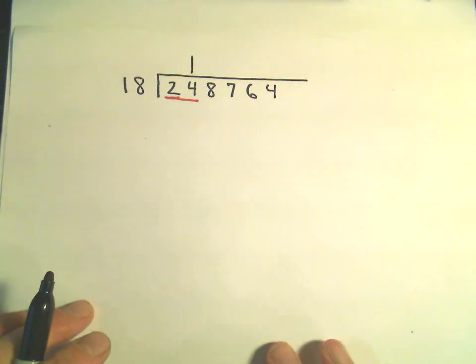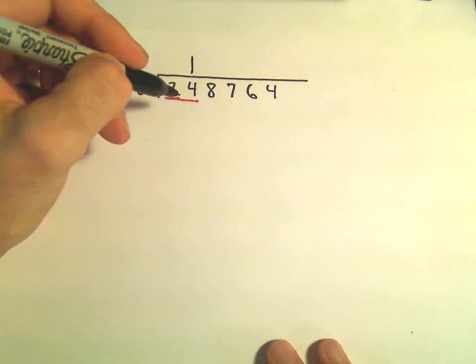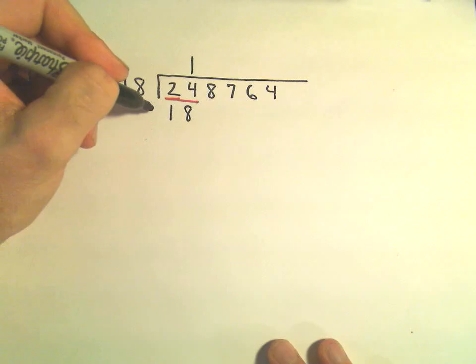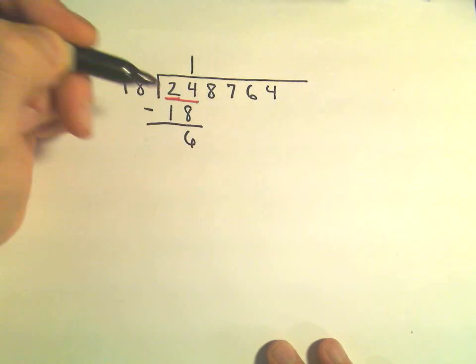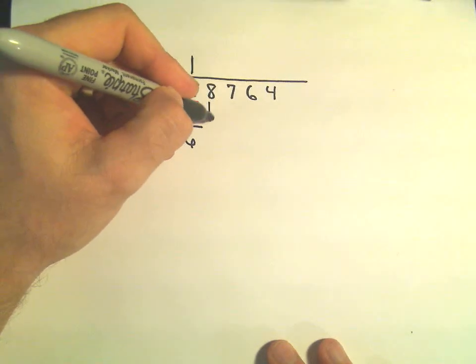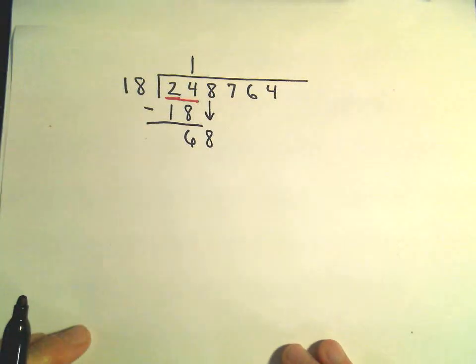And I believe 18 would go into 24 just simply one time. And then we just do our multiplication. So 1 times 18 is going to be 18. And then we subtract. 24 minus 18 is going to give us 6. And then we'll drop our 8 down. So now we've got 68.